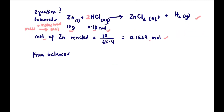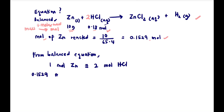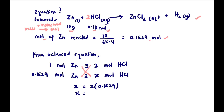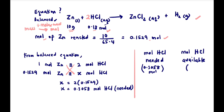From the balanced equation, 1 mole of zinc reacts with 2 moles of HCl. If we have 0.1529 moles of zinc, how many moles of HCl are needed? Cross-multiplying: x = 2 × 0.1529 = 0.3058 moles of HCl needed. Comparing moles of HCl needed (0.3058) versus moles of HCl available (0.18): we need more than what is available. Therefore, HCl is the limiting reactant.